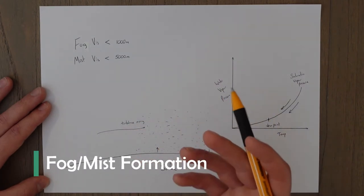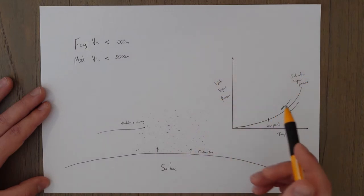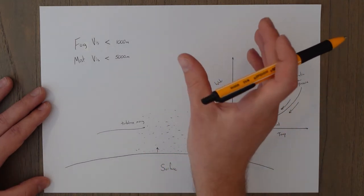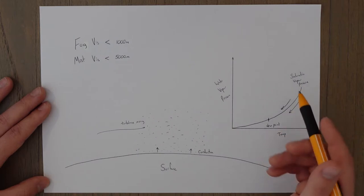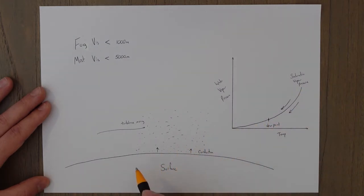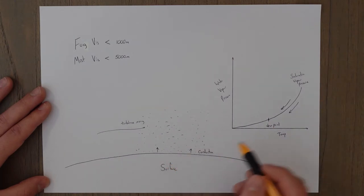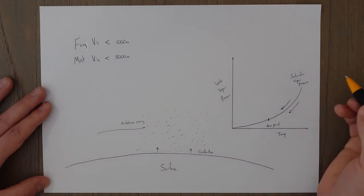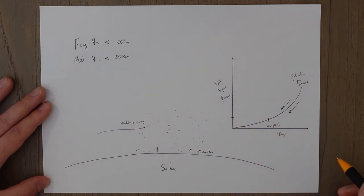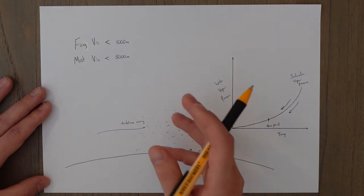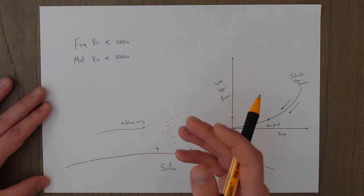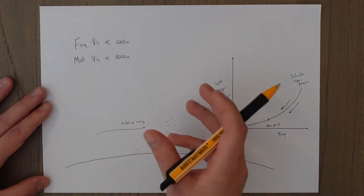Fog or mist is just very low cloud and it is formed slightly differently to regular clouds. The main difference is that the adiabatic rising and expanding process doesn't occur because the air isn't rising. With fog, the air is cooled because of a cold surface temperature through conduction and radiation, and that brings the saturation vapor pressure down until it meets the actual water vapor pressure in the air — the dew point — at which point the water vapor condenses out.